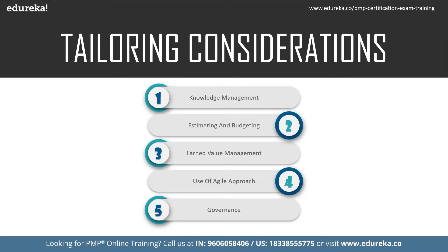Earned value management is the technique used to check how project management — relating to cost management specifically, schedule management and scope management — is performing in comparison with the baselines of these triple constraints defined in the project.